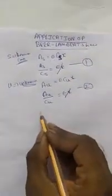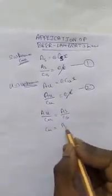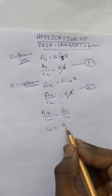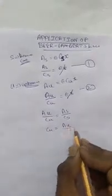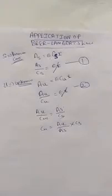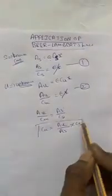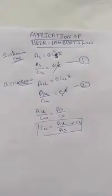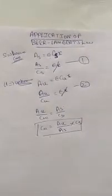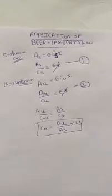When we compare the two equations, ε × x cancels out. We get A_u / C_u = A_s / C_s, which rearranges to C_u = (A_u / A_s) × C_s. So from the absorbance of the known and the unknown, the concentration of the unknown can be found: C_u equals the absorption of the unknown divided by the absorption of the standard, multiplied by the concentration of the standard.